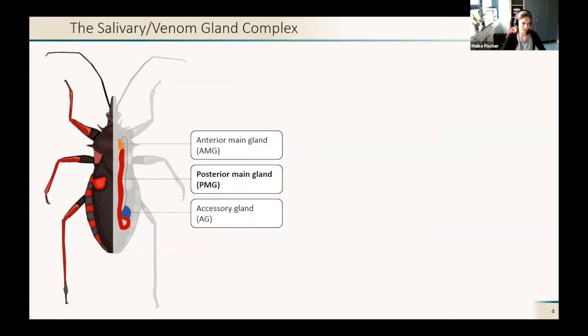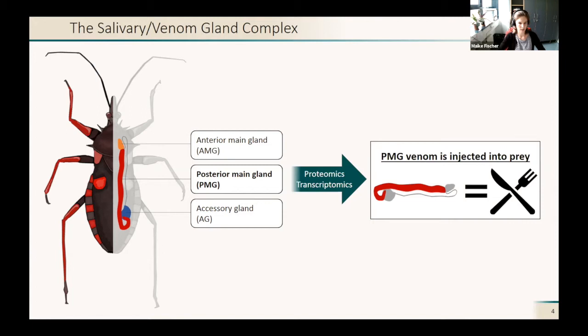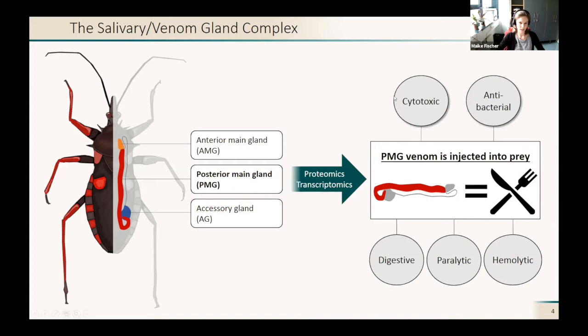I will focus today on the posterior main gland or PMG, the red part. With proteomics and transcriptomics, we found out that the PMG venom is the venom that is really injected into prey and not the AMG or AG venom. Only the PMG venom is injected.